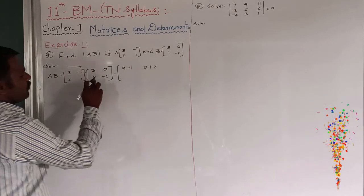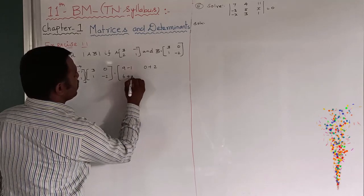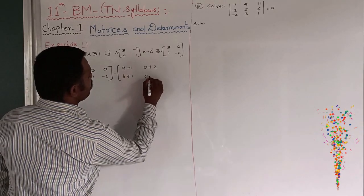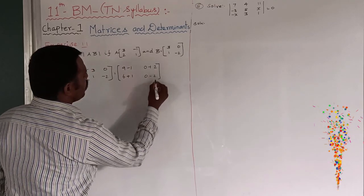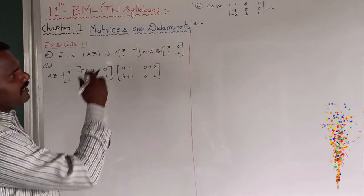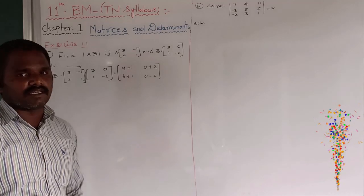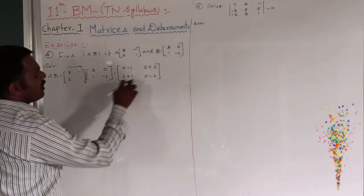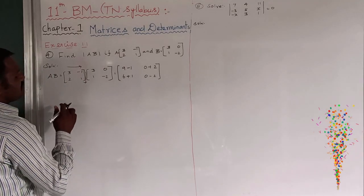And next is second row, first column. 3, 2s are 6. 1, 1 is 1. 6 plus 1. And what is that? 0 minus 2. 0 minus 2. So, don't confuse. This is a product of the matrix that is reducing the single term of the determinant. So, no need to put minus and dot. You have to directly product and write that. What the answer is getting?